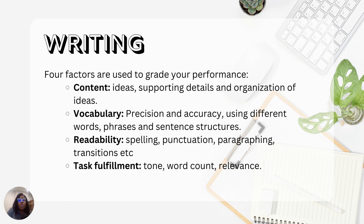The third rubric is readability. This covers your spelling, punctuations, and transitions — all very important. Take time to learn when to use a comma, a period, or a semicolon, and when to stop a sentence and start a new one. Write in such a way that makes it easier for your grader to read, understand, and confirm that your content has coherence.